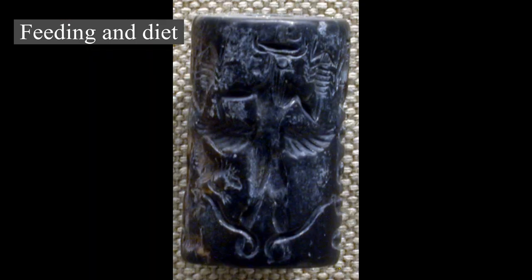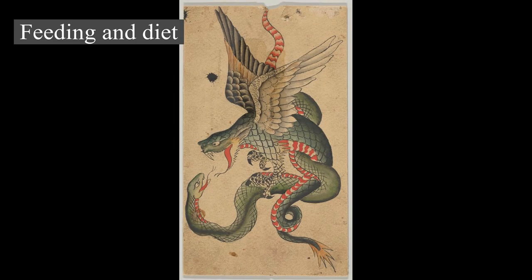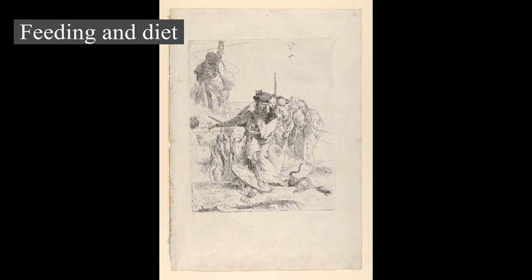Contrary to the popular belief that snakes can dislocate their jaws, they have an extremely flexible lower jaw — the two halves of which are not rigidly attached — and numerous other joints in the skull, which allow the snake to open its mouth wide enough to swallow prey whole, even if it is larger in diameter than the snake itself. For example, the African egg-eating snake has flexible jaws adapted for eating eggs much larger than the diameter of its head. This snake has no teeth but does have bony protrusions on the inside edge of its spine. The majority of snakes eat a variety of prey animals. King cobras and the Australian bandy-bandy consume other snakes. Species of the family Pareidae have more teeth on the right side of their mouths than on the left, as they mostly prey on snails whose shells usually spiral clockwise.